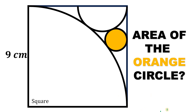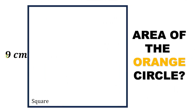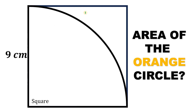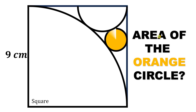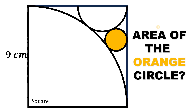Can you solve this geometry challenge? Here's the question. Given this square with a side length of 9 centimeters, let's draw a quarter circle, then a semicircle that is tangent to this quarter circle, and now let's draw a circle shaded in orange. The question is: what is the area of this orange circle?